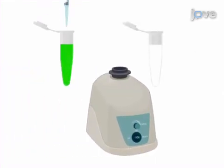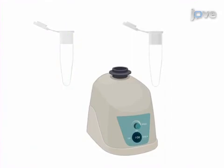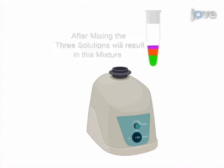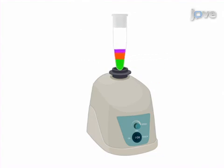The second step is to place the reagents into a microcentrifuge tube and vortex them while maintaining a temperature of 37 degrees Celsius.